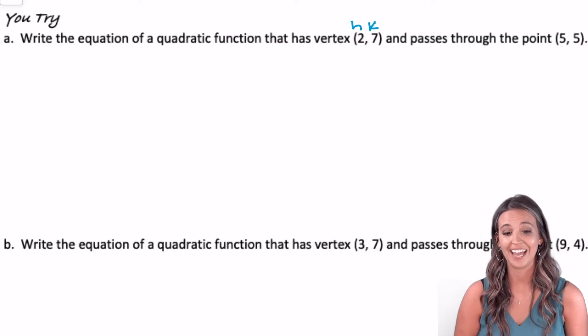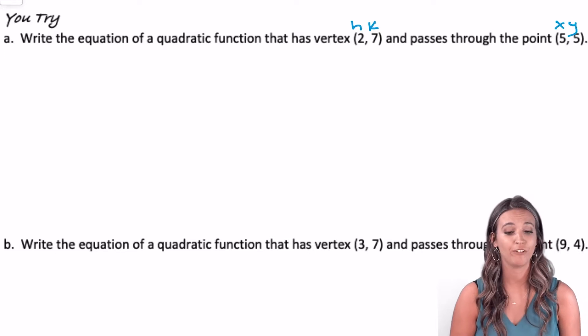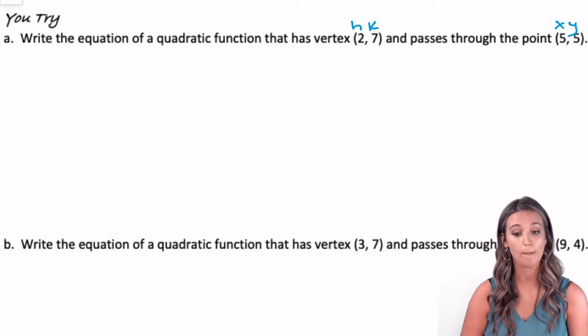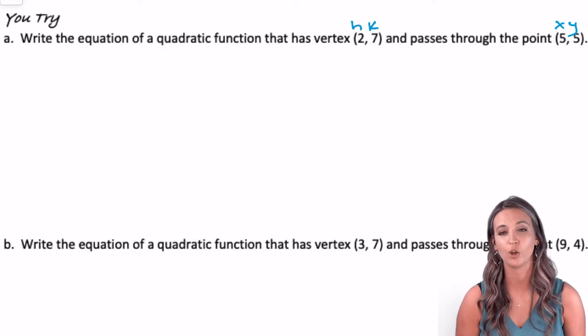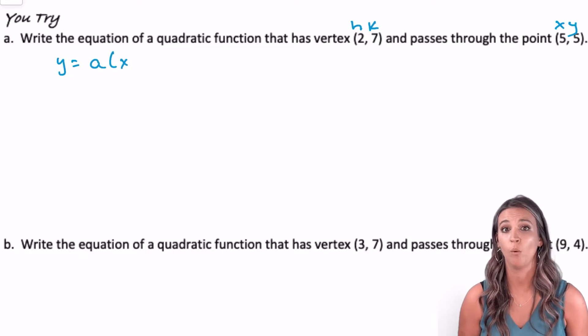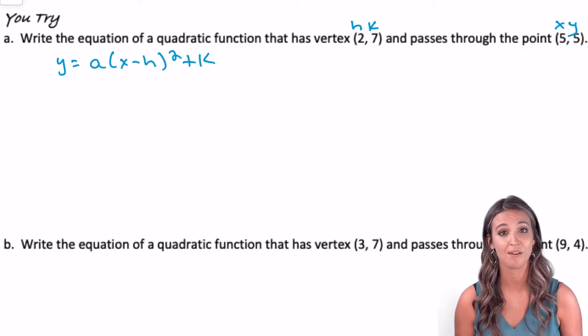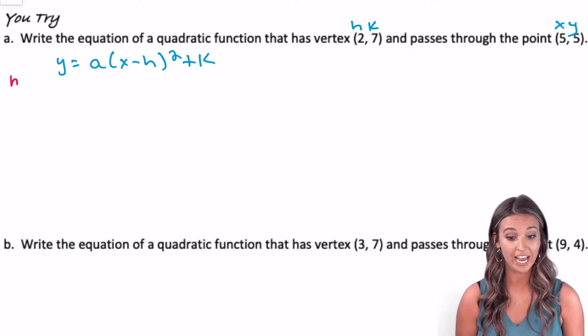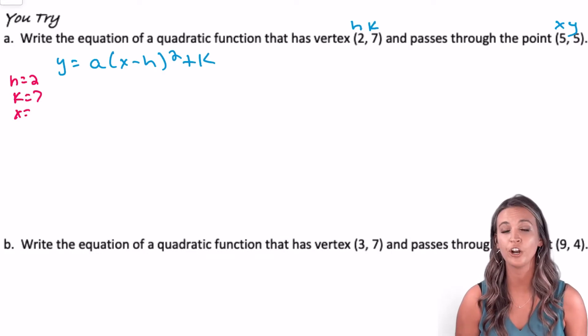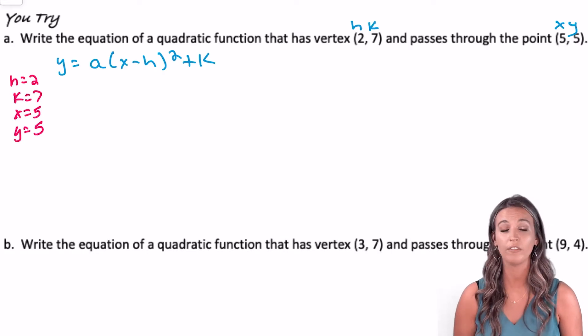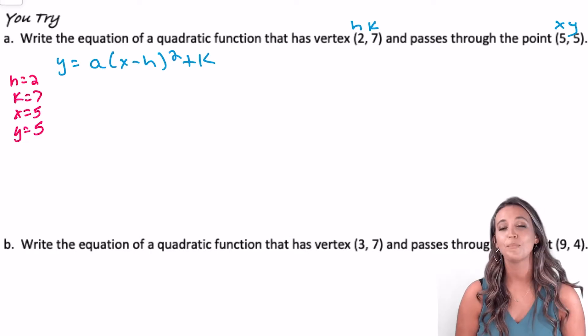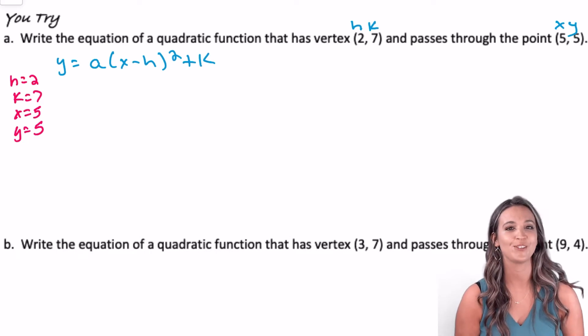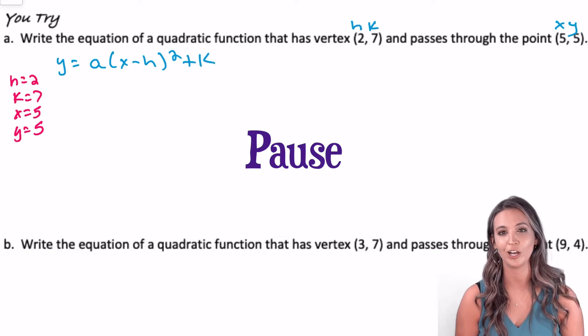Let's try this process again. Now we have a quadratic function with the vertex (2, 7) passing through a point of (5, 5). We want to write a quadratic equation. Before, we started by writing our general form, Y = a(x - h)² + k. We know the vertex is (2, 7), so that's our h and our k. And we have a point on this quadratic function (5, 5), so that's our x and our y. Pause and substitute in those values to find the general equation for the quadratic function.